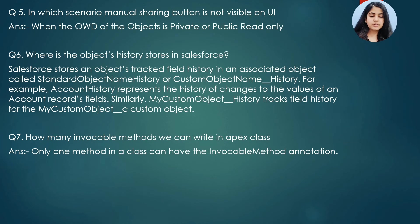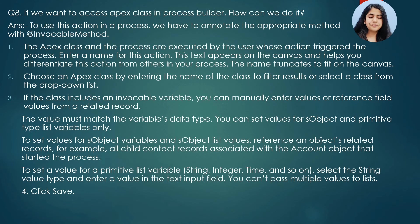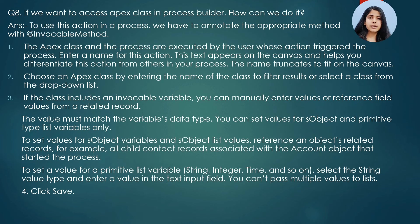The next question was: if you want to access an Apex class in Process Builder, how can we do it? To use an Apex class in Process Builder, we need to write an Apex class that has the @invocableMethod annotation. We write the invocable method in the Apex class, and then in Process Builder we define the process name, select the Apex class, and specify which fields need to change — we have to mention all those details in Process Builder as well.